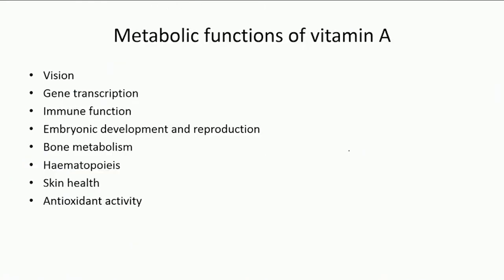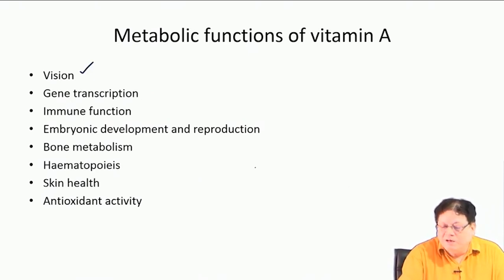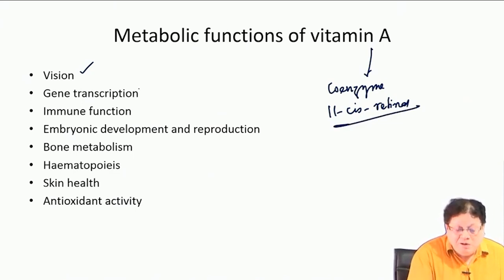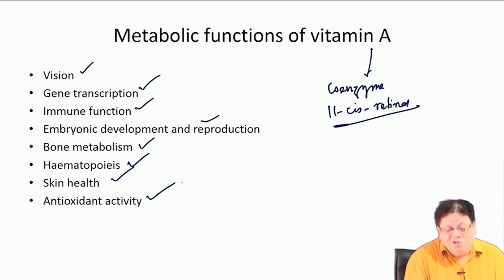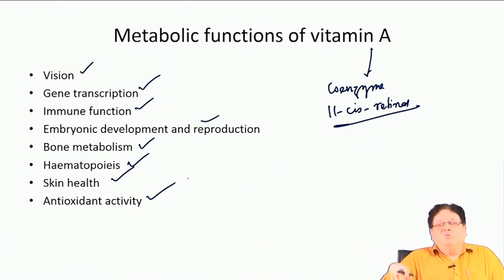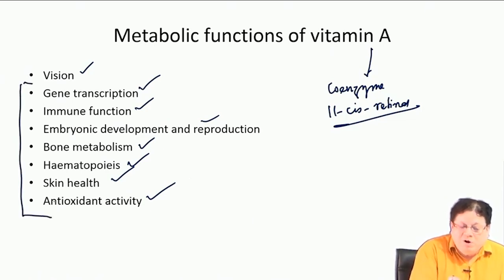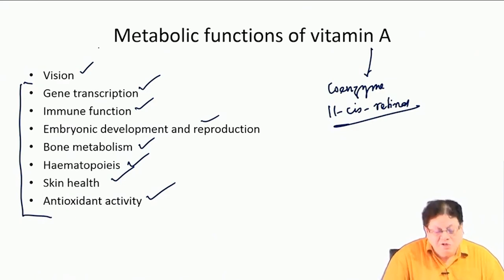Apart from vision, vitamin A has many other important functions: it plays a role in gene transcription, immune function, embryonic development, reproduction, bone metabolism, hematopoiesis (red blood cell formation), skin health, and antioxidant activity — because it has many double bonds that can quickly consume oxygen radicals. So deficiency of vitamin A causes many types of problems.